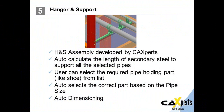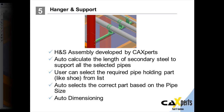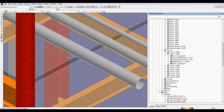Now let's take a look at a hanger and support assembly developed by CA experts. The length of secondary steel which supports all the selected pipes is automatically calculated. The user can select the required pipe holding part, like a shoe, from the list. The correct part is automatically selected based on the pipe size, and auto-dimensioning is also included.